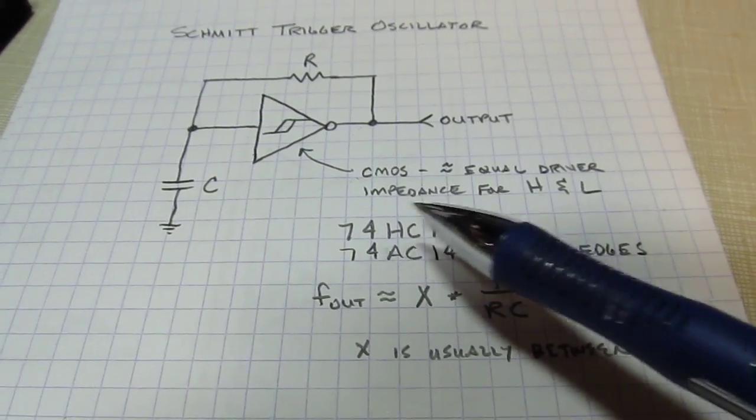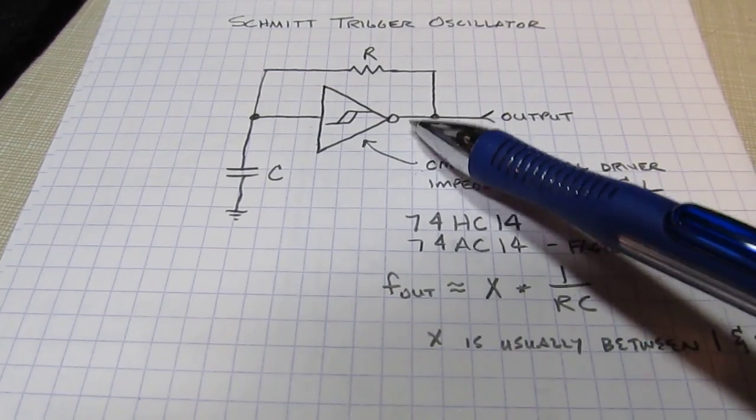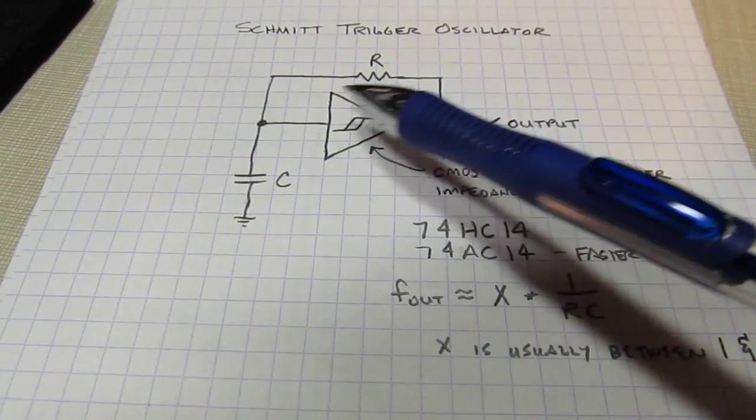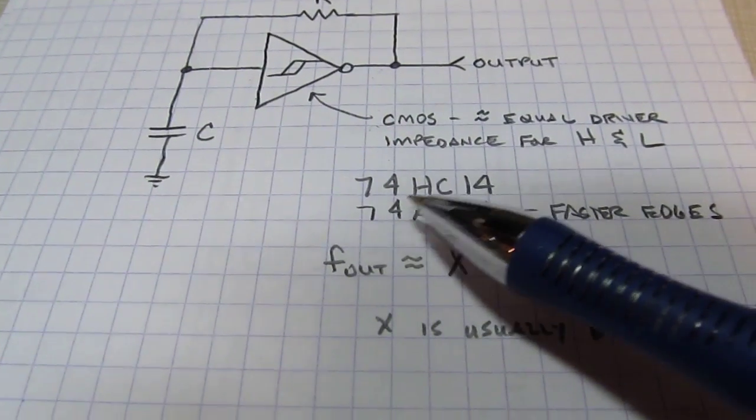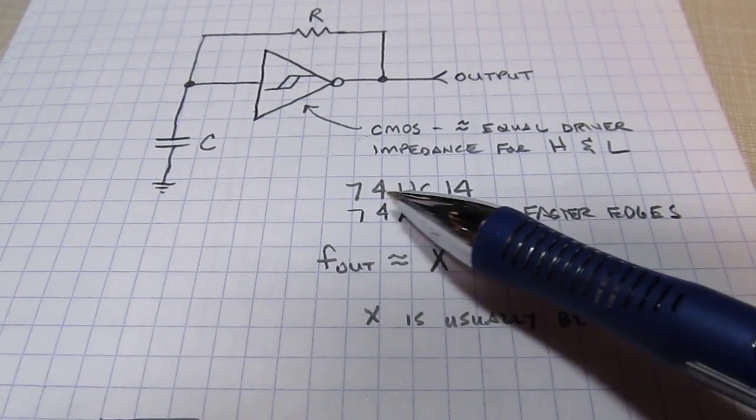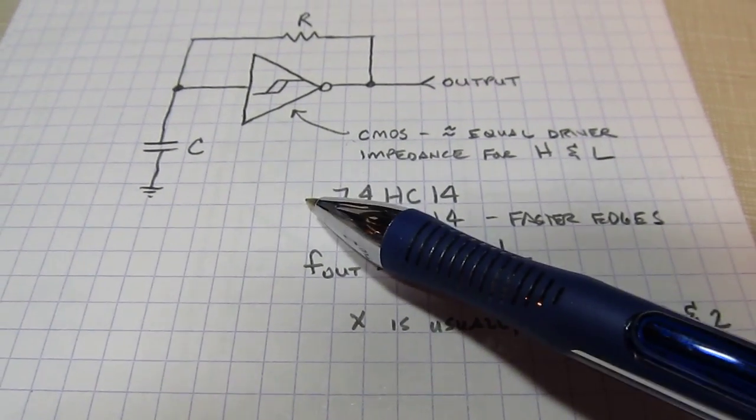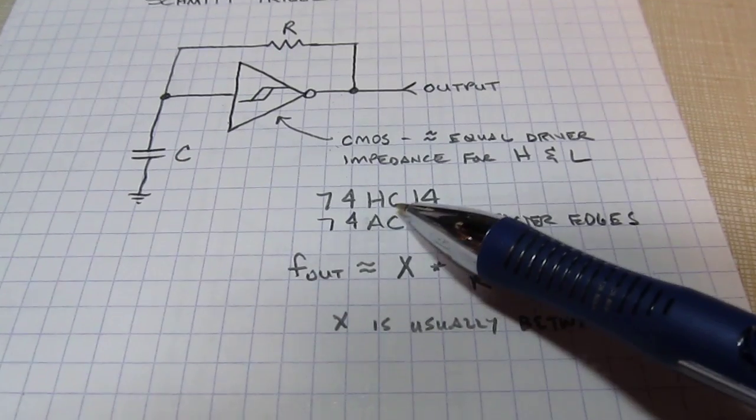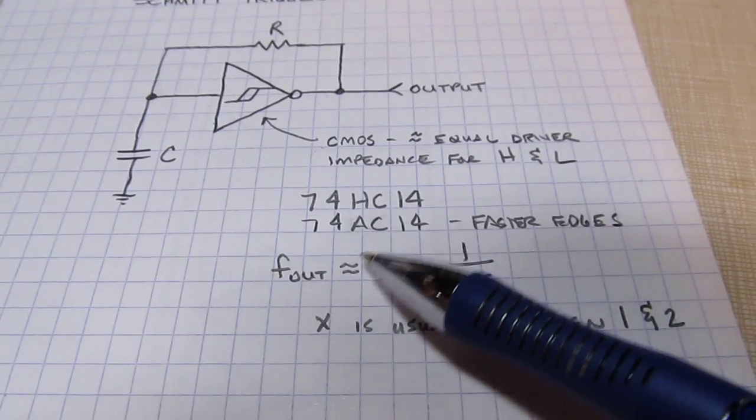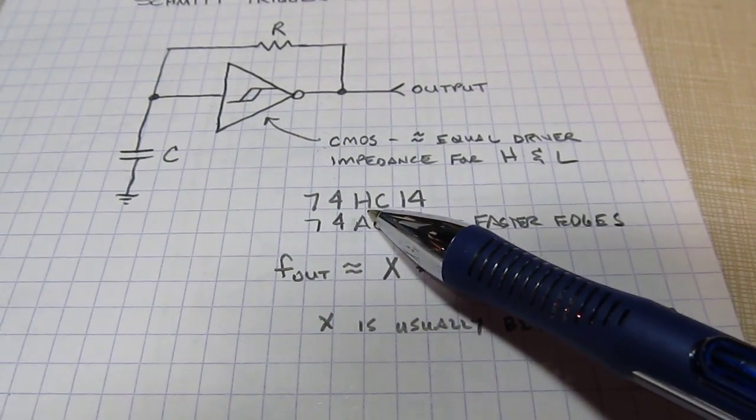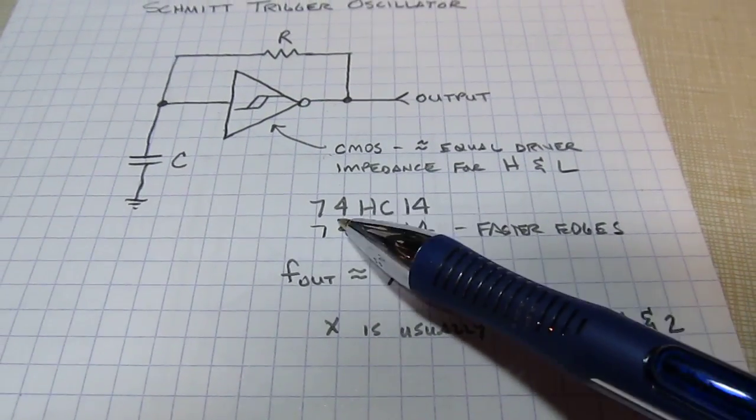And typically, you know, we'll use a CMOS device because we want kind of the output impedance during the high and low to be about equal so that we can get a close to 50% duty cycle. So real common devices to use are like a 74 series, and this could be MC74, it could be SN74. Different manufacturers will have different prefixes. The middle letters, usually if it includes a C, means it's a CMOS compatible device or CMOS device. And then there's different ones, like there could be just a 74C14 would just be a CMOS version of that.